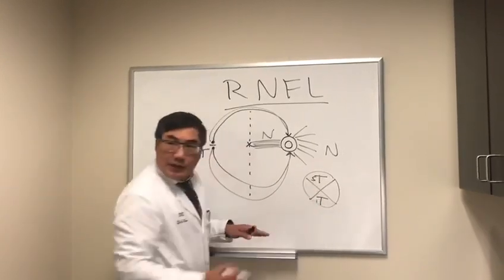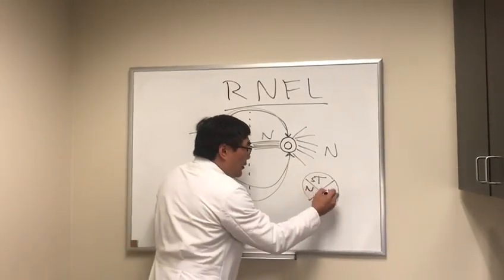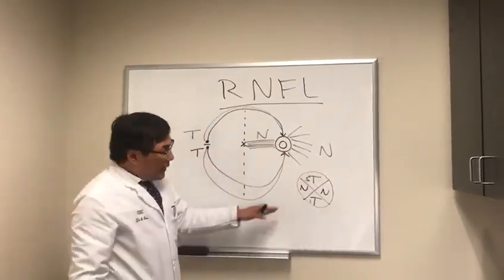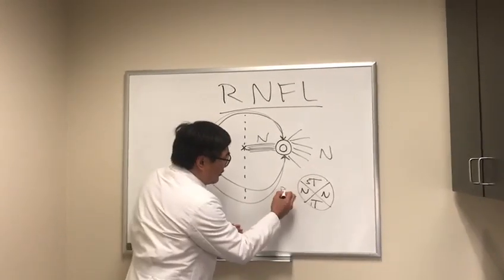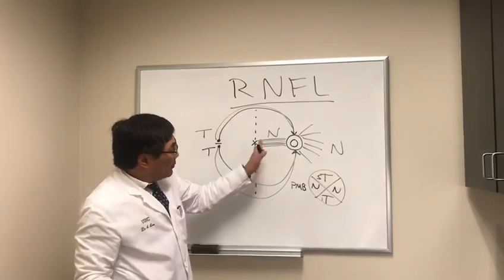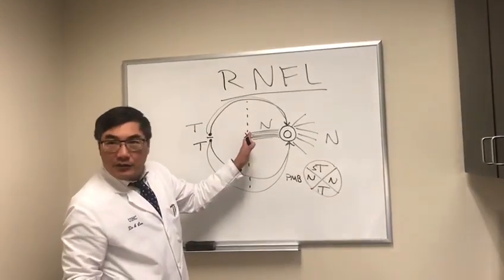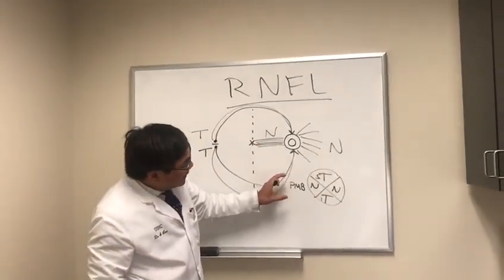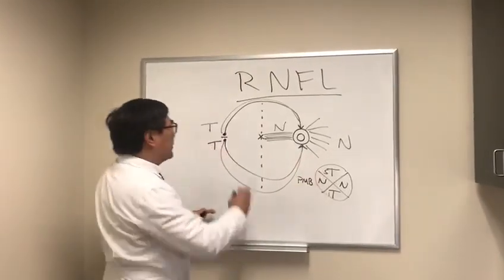This nasal fiber has a special name called the papillomacular bundle, but it's still a nasal fiber because mostly it's nasal to this fovea. What that means is normally in glaucoma, because the temporal fiber is more susceptible, we get cupping that causes a vertical type of notch.